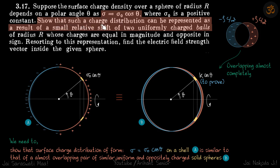Now we need to show that such a charge distribution can also be represented as a result of a small relative shift of two uniformly charged balls. Here let's say these are two balls and this has charge density of minus rho and this has plus rho. When they will overlap, in the overlapped region charge will become zero because the densities are equal and opposite. If you overlap them further and overlap them almost completely, it's going to look something like this.